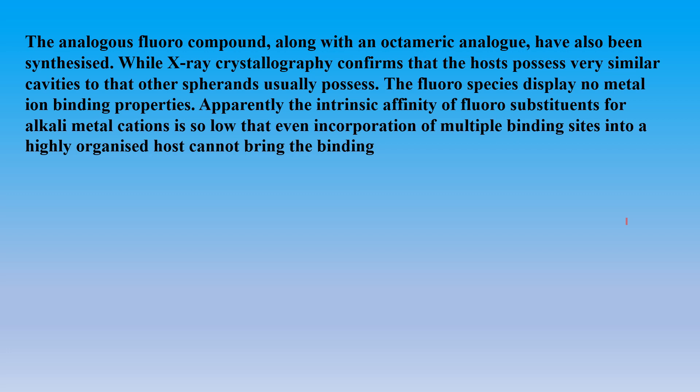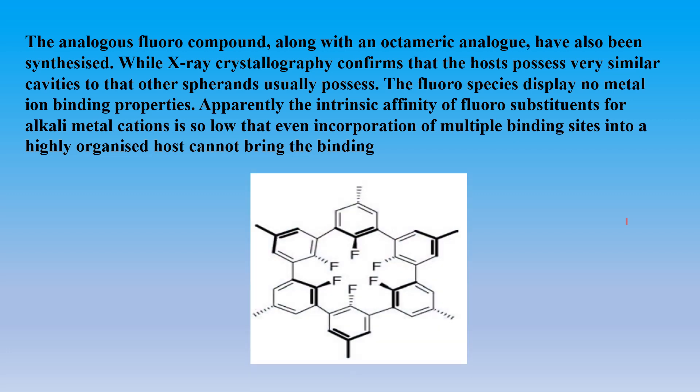Spherands with fluorocompounds have also been prepared, but they have lesser affinity for cations. The arrangement is still a perfect octahedral arrangement — three oxygen atoms above the plane and three below. However, fluorosubstituents intrinsically have less affinity for alkali metal cations. Even if you incorporate additional diethylene glycol linkages or multiple binding sites, the binding effect cannot be improved in fluorocompound spherands.